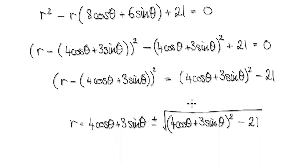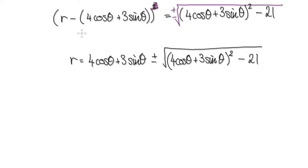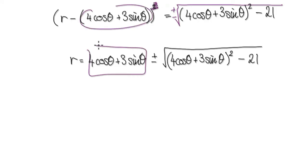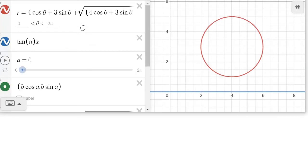Square root both sides, which gives both a positive and negative version: r = (4 cosθ + 3 sinθ) ± √((4 cosθ + 3 sinθ)² + 21). So r equals this expression. If you punch this into decimals, it gives you the circle.